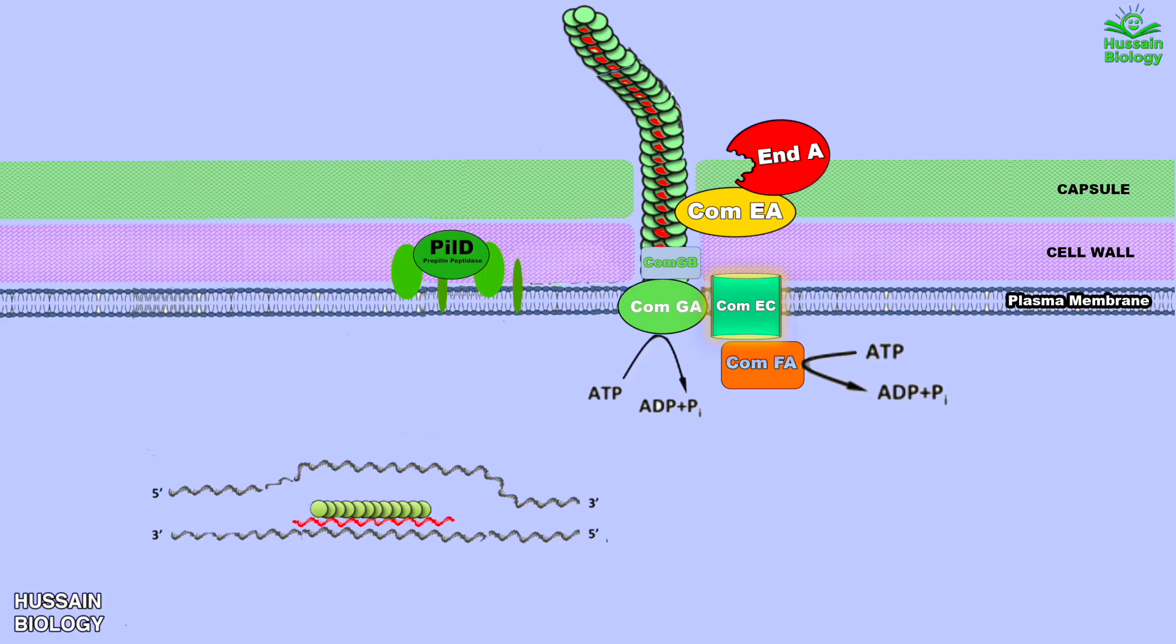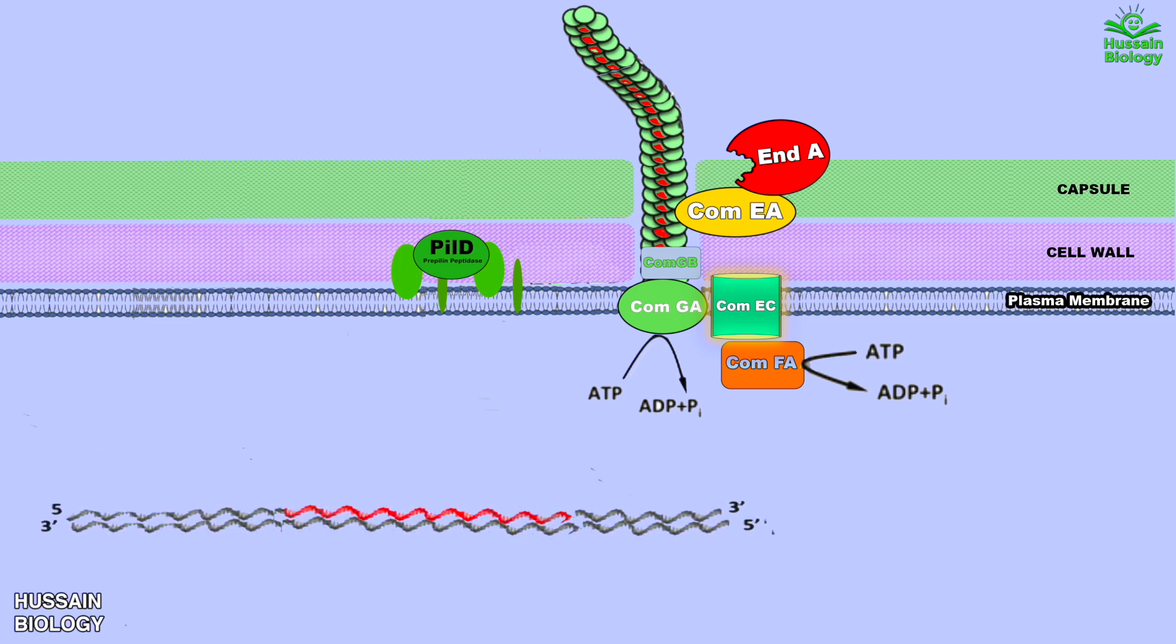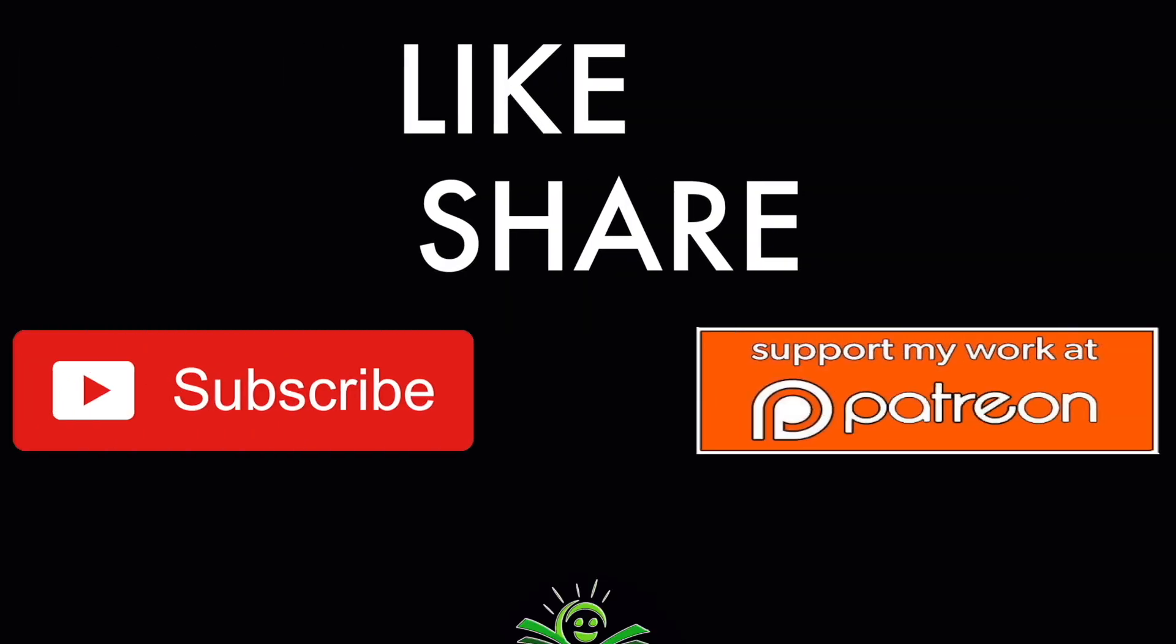Finally we get homologous recombination as shown in the animation. We see the donor DNA has been integrated into the recipient chromosome. This is how transformation is done within the bacterial cell.